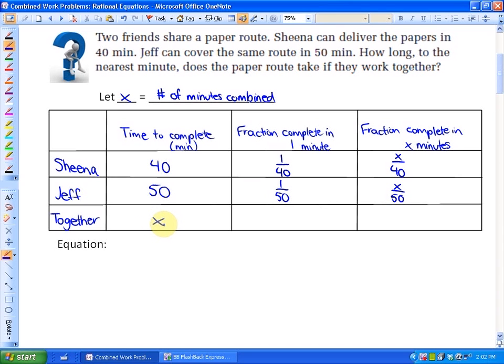Together, it's going to take them x amount of time. In one minute, the fraction they'd complete is 1/x. In x minutes, they'd be done x/x, or one job. To come up with our equation, Sheena's work plus Jeff's work has to equal their work together. The equation is x/40 plus x/50 equals 1.